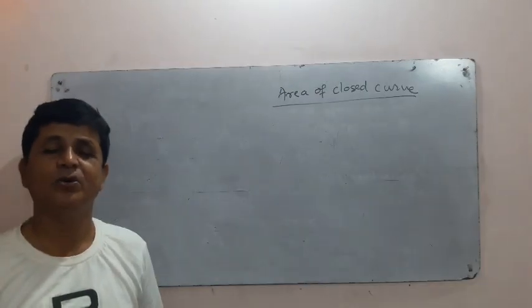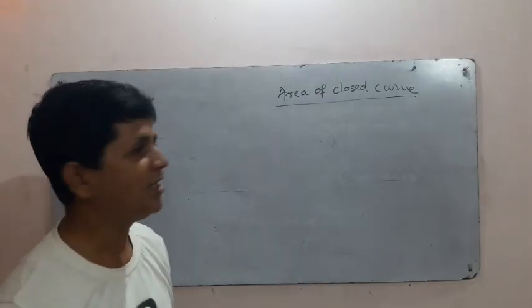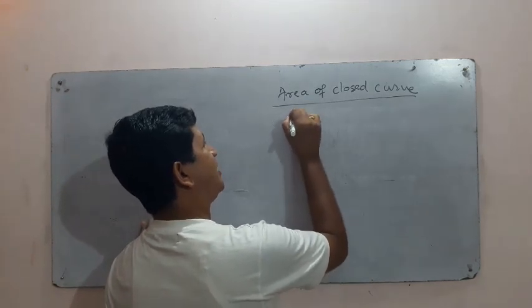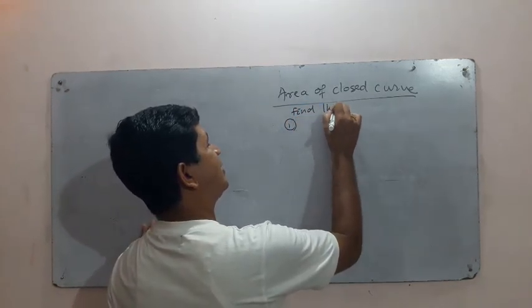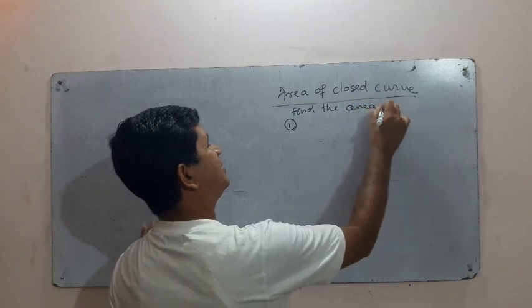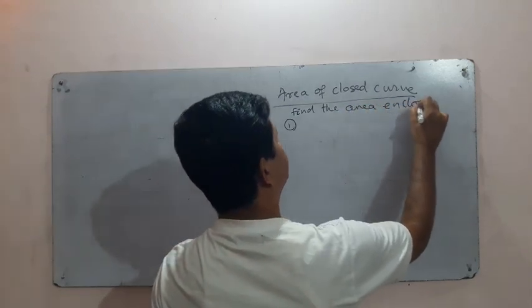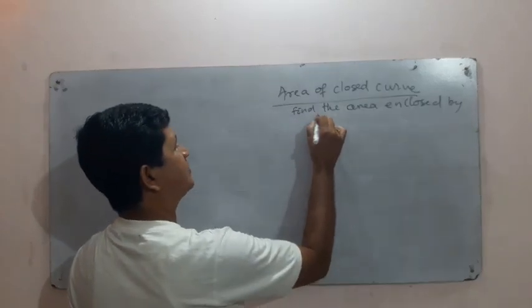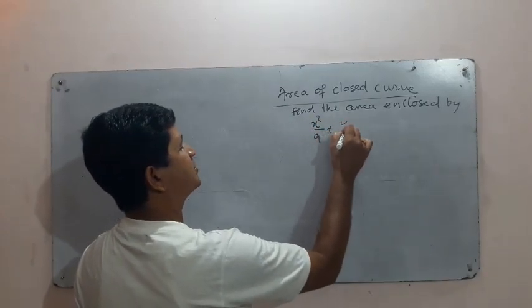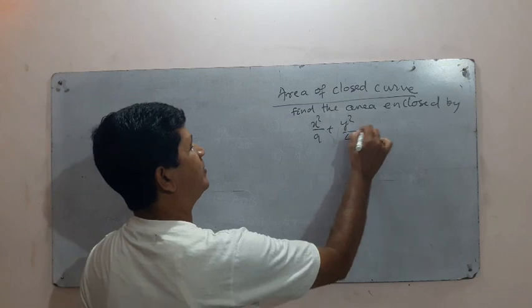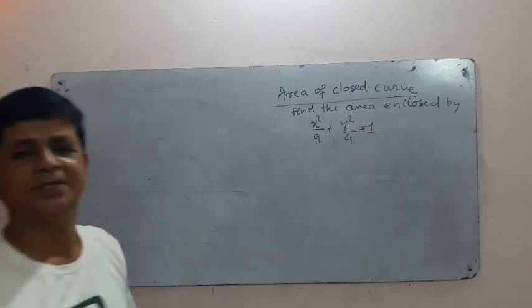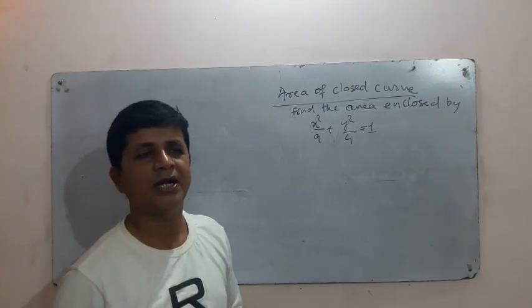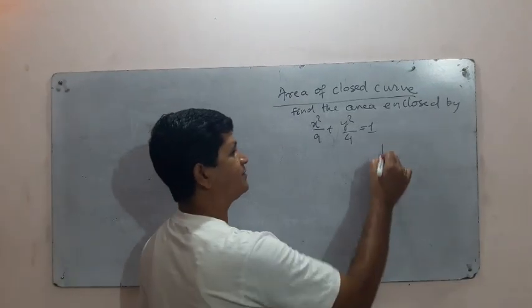How to find the area enclosed by a single curve? Find the area enclosed by x²/9 + y²/4 = 1. It is an ellipse and we must draw the ellipse.